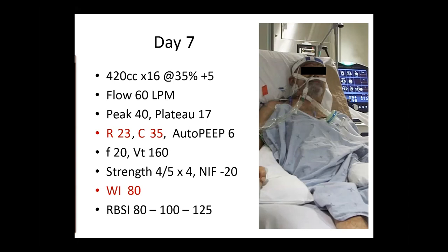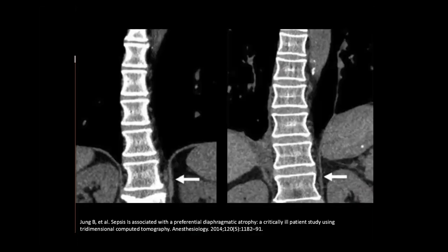Comparing the pre-admission CT scan to the current CT scan, the fellow says: I think this man has diaphragmatic weakness. Looking at the diaphragm pre-admission, it looks thicker than it does now. A study by Jung used spiral CTs to assess diaphragm volume, reporting that in 23 critically ill patients, diaphragm volume was no different from controls on admission, but after 25 days decreased by 11% in non-septic patients and 27% in septic patients compared to baseline.